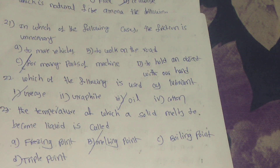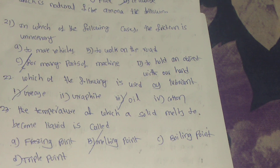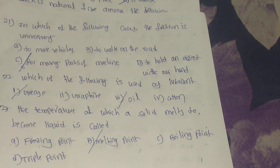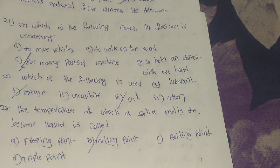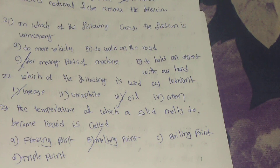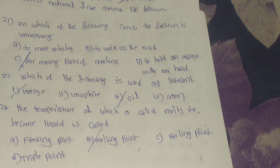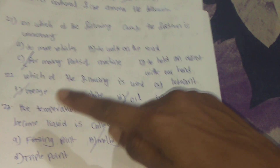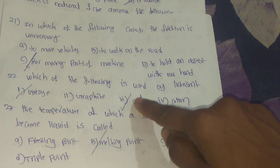21st question: in which of the following cases is friction unnecessary? Answer: option C, for moving parts of a machine. 22nd question: which of the following is used as a lubricant? Answer: grease and oil — both 1 and 3 is the answer.